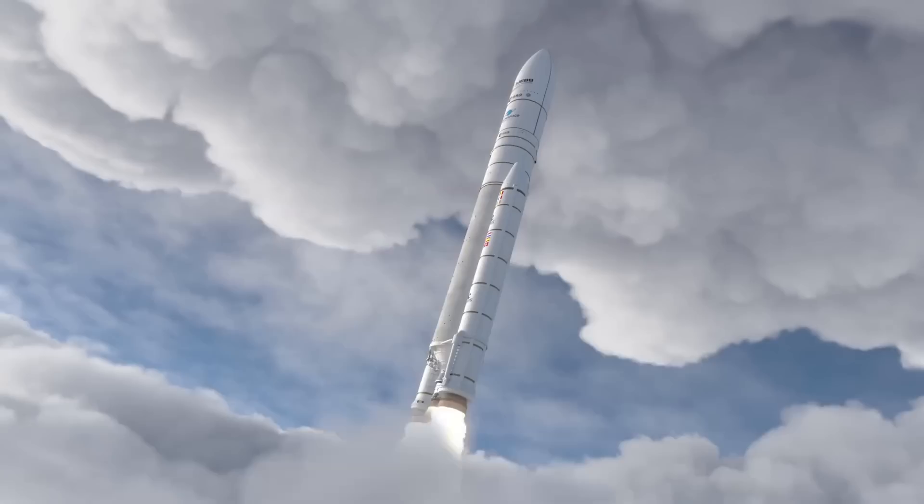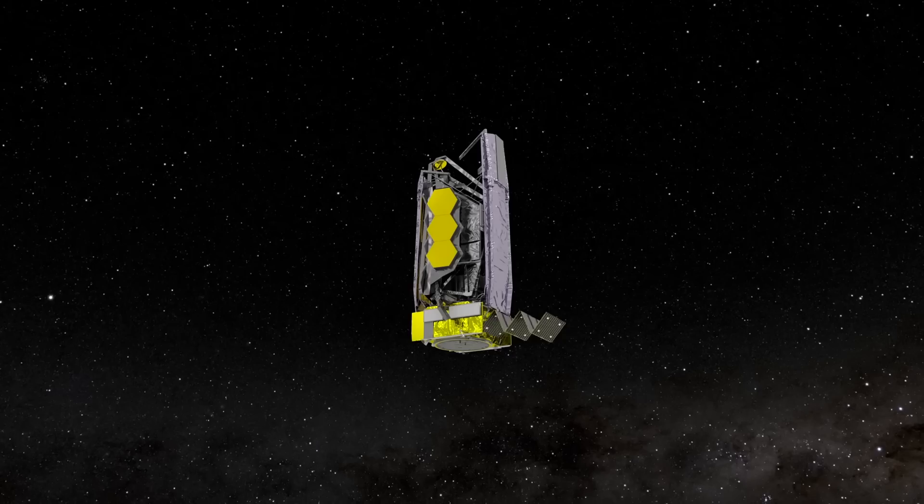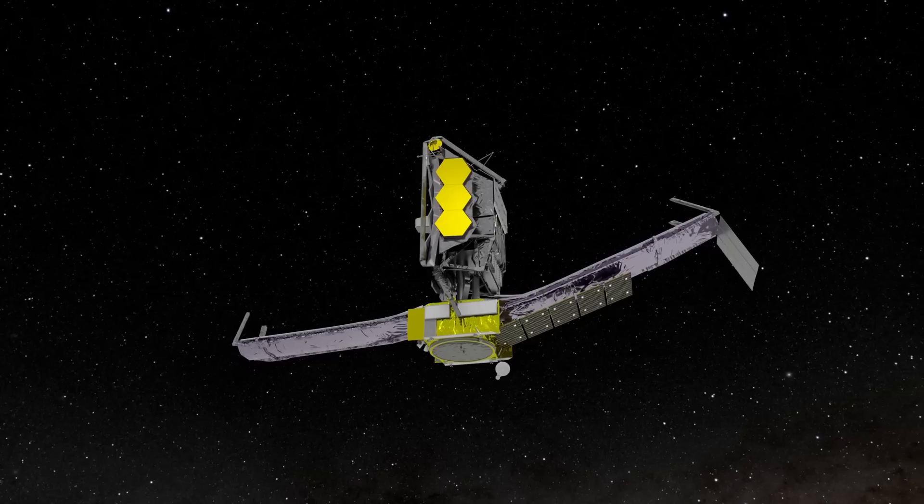It was safely launched from the European Space Agency's spaceport in French Guiana. After the launch, it detached itself from the rocket and began to unfold. According to NASA, the first deployment occurred roughly 30 minutes after launch when the solar panels opened, allowing the telescope to draw power from the sun.